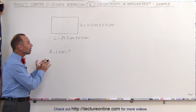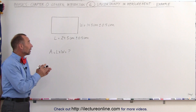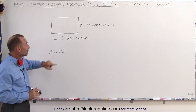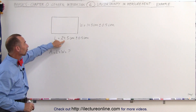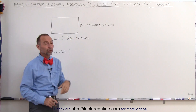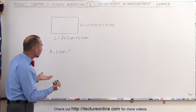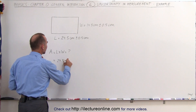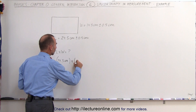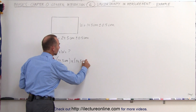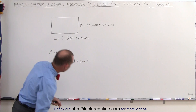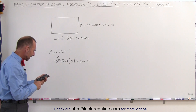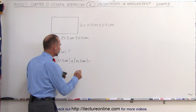Now, what is the area of this object? If the numbers that we got were absolutely accurate, and we knew there was no uncertainty whatsoever — if we knew the length was exactly 24.5 centimeters and the width was exactly 14.5 centimeters — the area would be calculated as 24.5 centimeters multiplied times 14.5 centimeters, and we get 355.25 square centimeters.